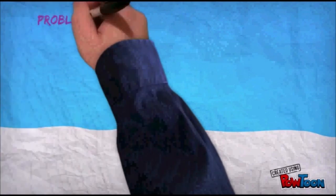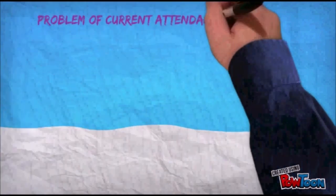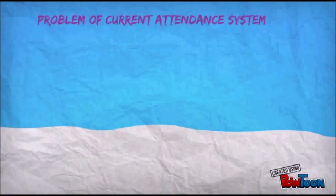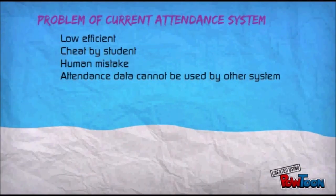The existing conventional attendance system requires students to manually sign the attendance sheet every time they attend a class. This leads to low efficiency, cheating by students, human mistakes, attendance data that cannot be used by other systems, and some other mistakes and inconveniences.